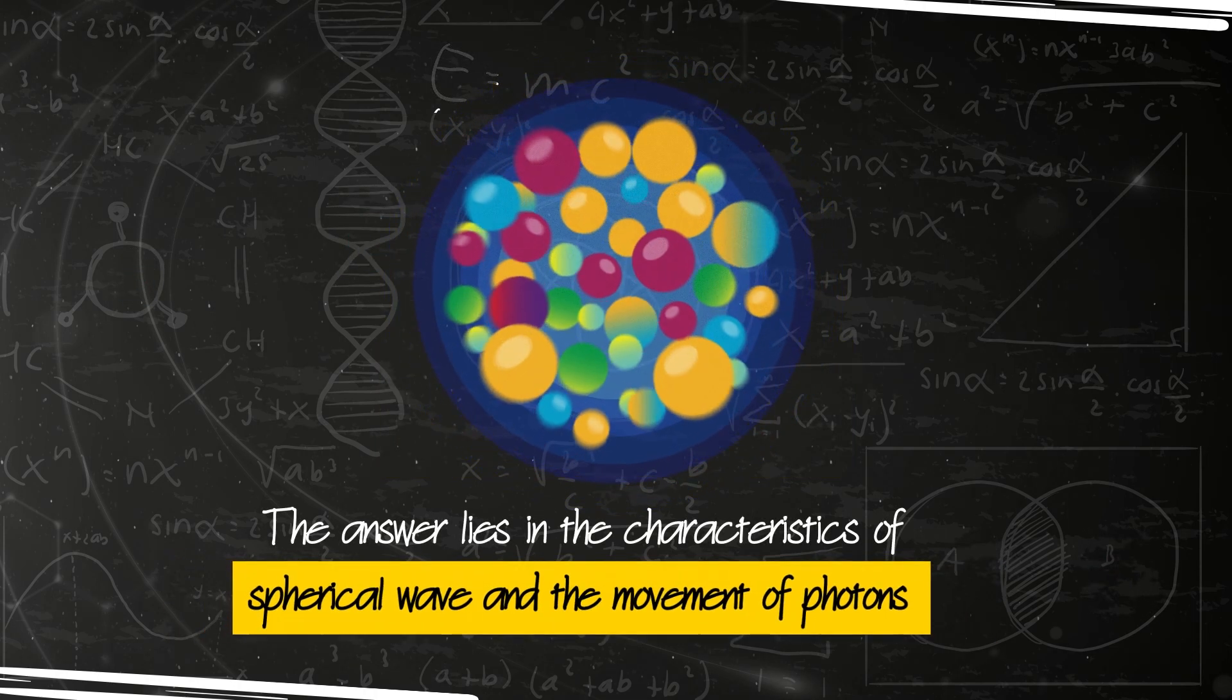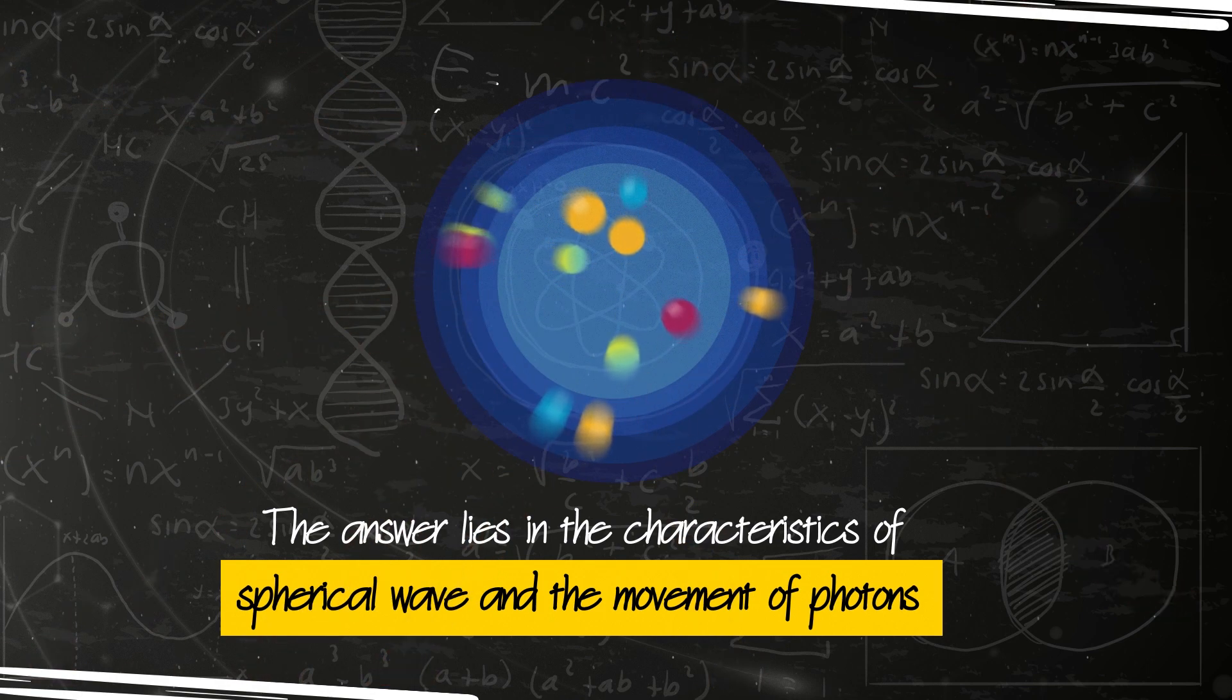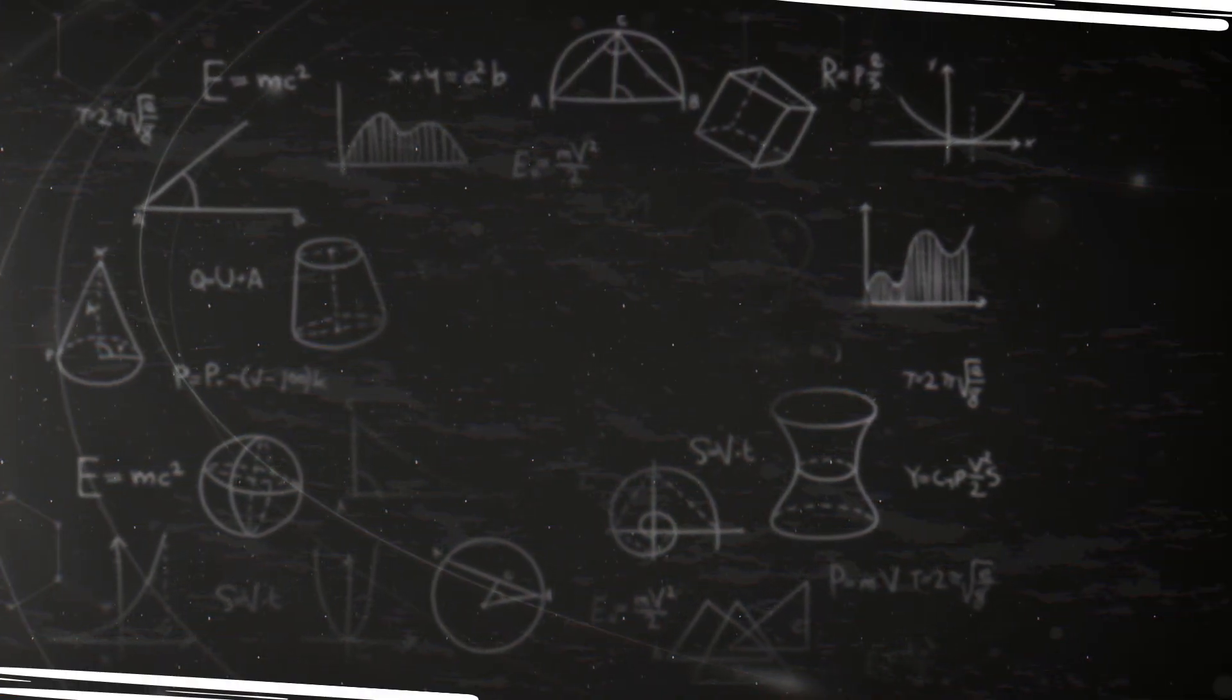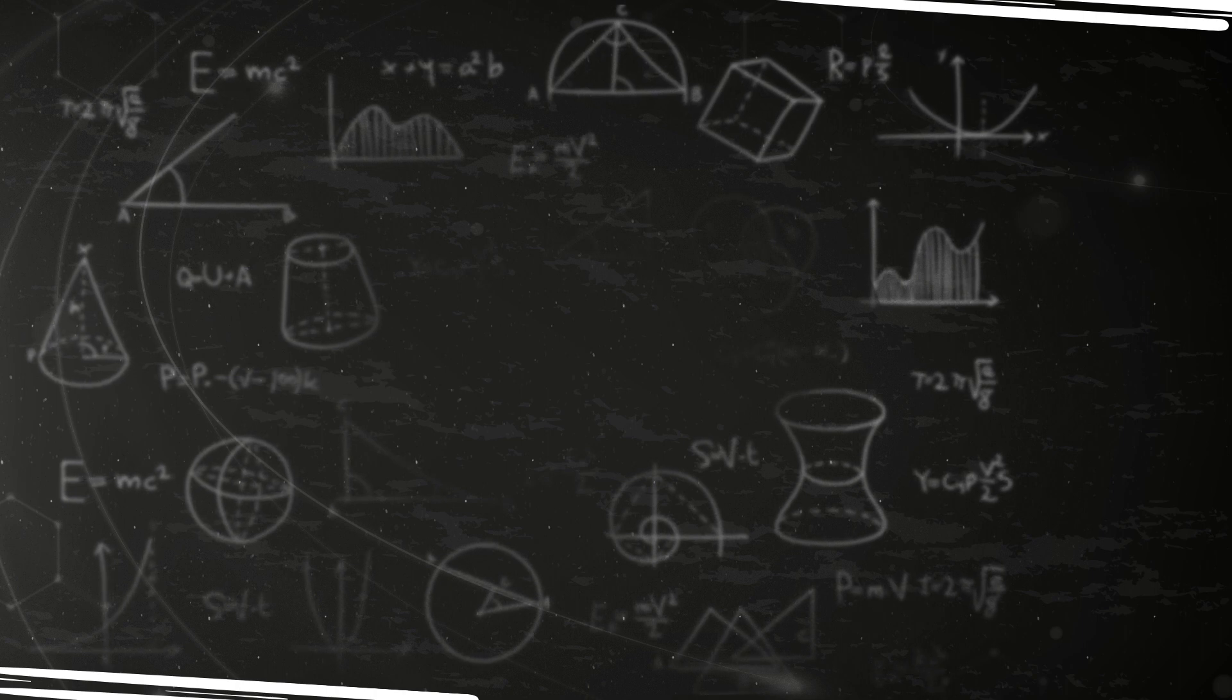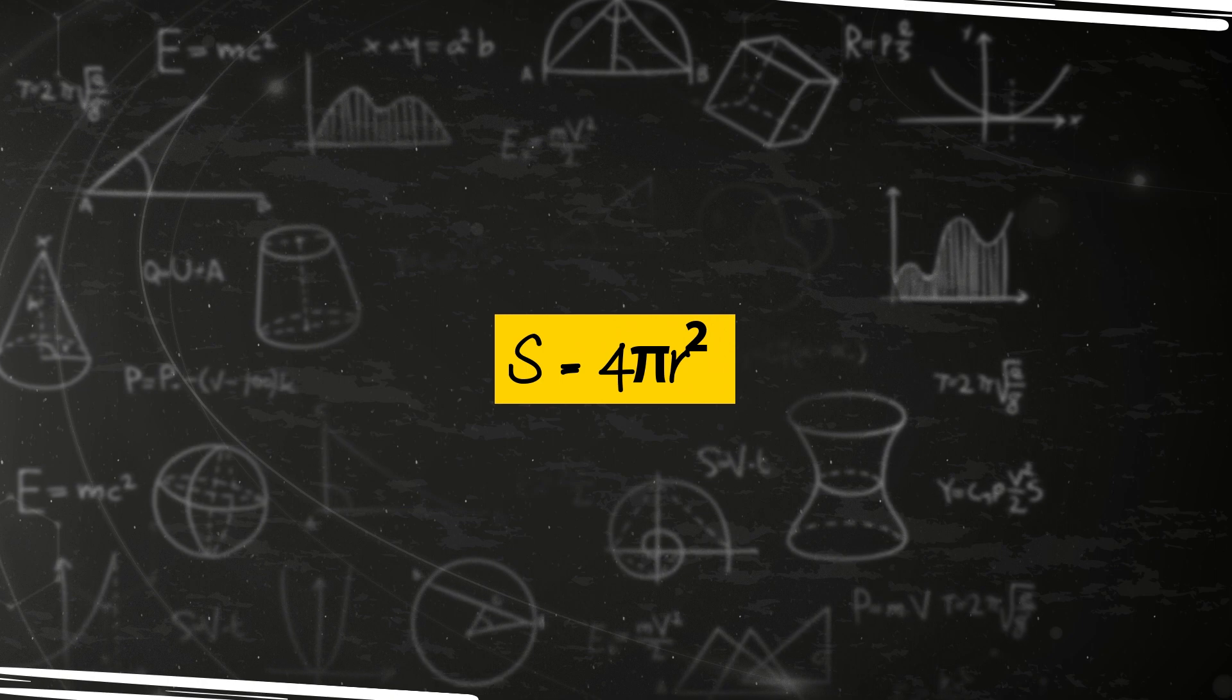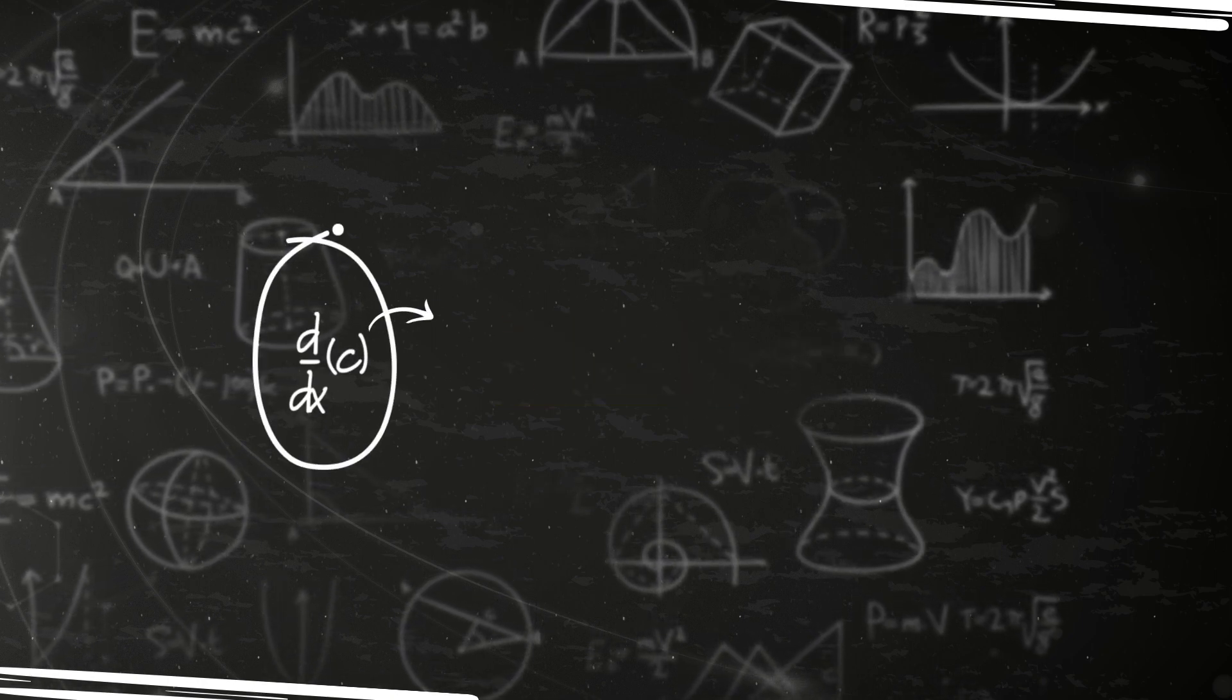The answer lies in the characteristics of spherical wave and the movement of photons. An exploded bomb generates heat, photons, and blasting force. Everything is pushed outwards in all directions creating spherical waves. To calculate the surface of a sphere containing all affected photons after an explosion, one uses S equals 4 pi r squared, but C squared replaces r squared.